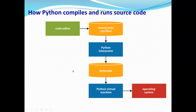Now let's look at how Python compiles and runs source code. First, we always need a code editor — for example, Notepad is a basic editor we can use to create a source file. When you save a Python file, the extension must be .py — that is what makes the file a Python source file.